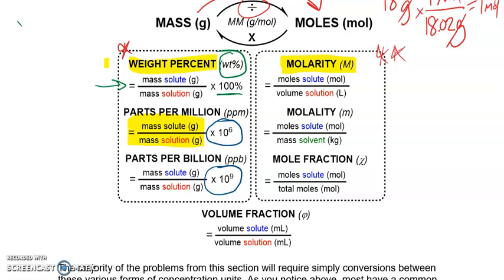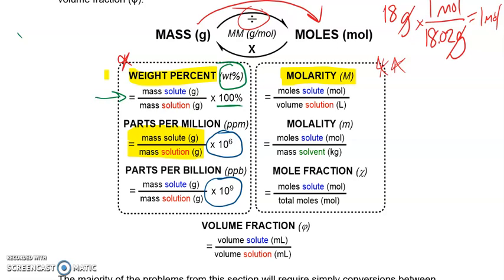Most of the chemicals you'll use in lab will either be made to a specific molarity or will already be at a specific molarity. Molarity is similar to the left-hand side, but rather than dealing with mass, it deals with moles. We use moles because it's easier to compare — a species with a very small molar mass versus a very large molar mass might seem very different by weight, but the number of moles — how much can actually react — is the same. The equation for molarity is moles of solute divided by the overall volume of the solution. Most commonly you'll start with grams, so you'll need to do that mass-to-moles conversion first.